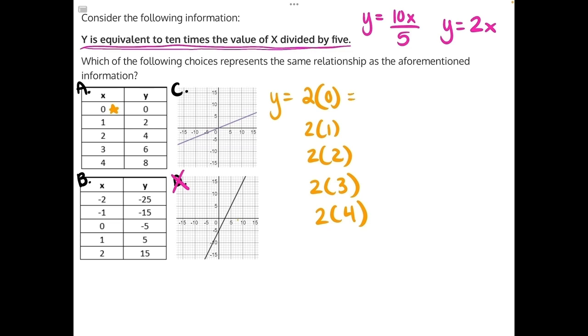And really what this is going to do is we're just going to be counting up by 2s. We're just going up our 2 multiplication table. 2 times 0 is 0. 2 times 1 is 2. Then 4, 6, 8. And that does match all of our y values here. So it's looking like A is the correct answer. But let's double check answer choice B and C.